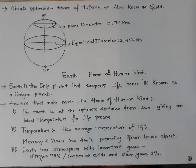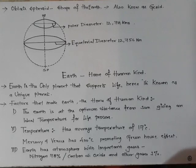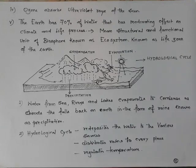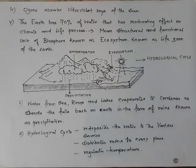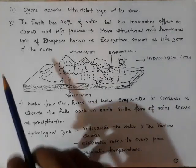The earth's average temperature is around 17 degrees Celsius, whereas Mercury and Venus have temperatures of around 400 degrees Celsius — at such temperatures there cannot be any life, and there can be large-scale greenhouse effects. The earth has important gases like nitrogen and carbon dioxide. Ozone is an important gas in the earth's atmosphere that protects the earth from ultraviolet rays, which can have adverse effects on human skin and can cause skin cancer.